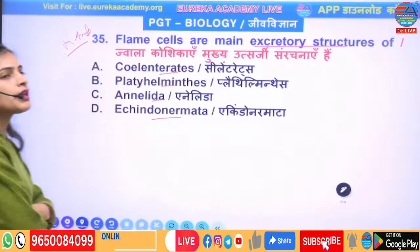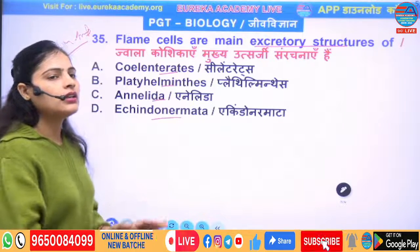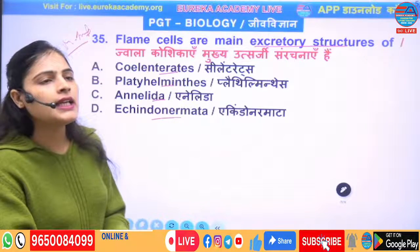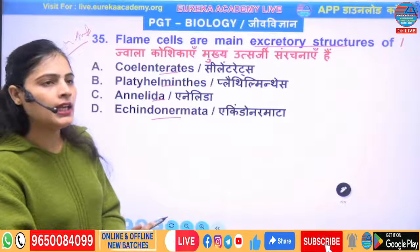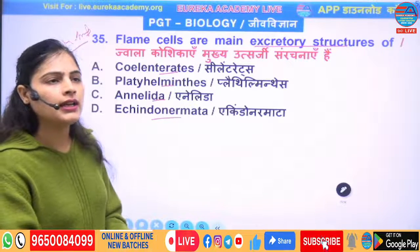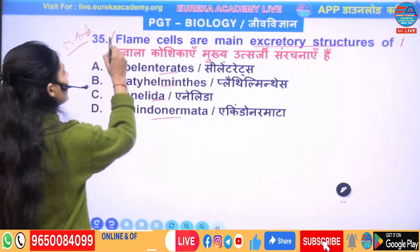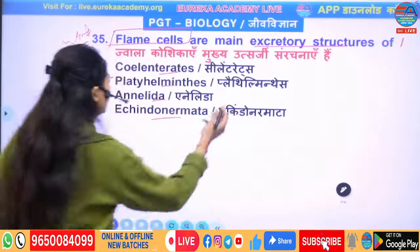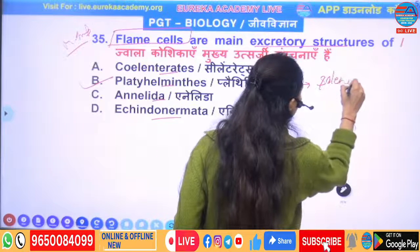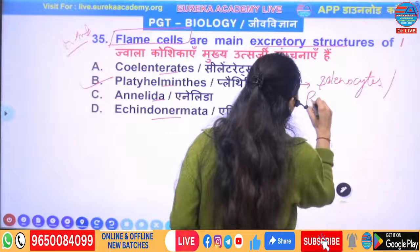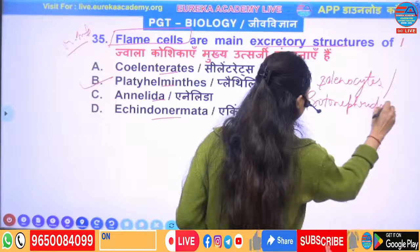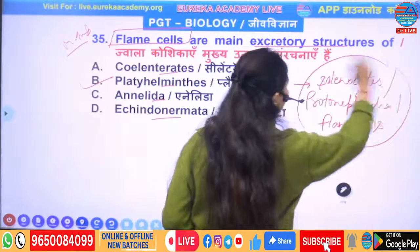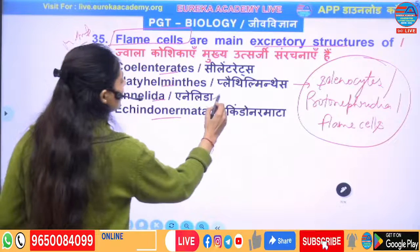As we discussed in class, Platyhelminthes have flame cells, also called solenocytes or protonephridia, as their excretory organs. In Annelida, excretion occurs through nephridia. So the correct answer is Platyhelminthes, and the excretory organs are flame cells, solenocytes, or protonephridia.